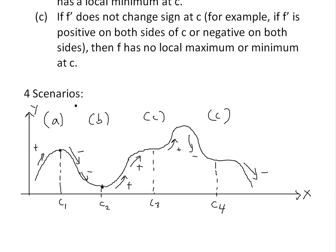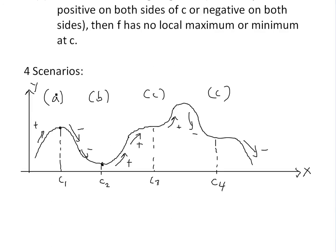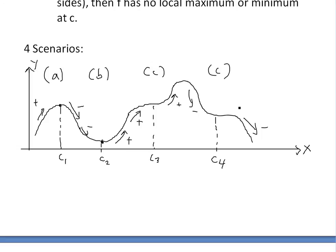Here are the scenarios I went over last time. Part a goes from positive to negative — that's a local max. And this is negative to positive — a local minimum. And then here, it goes from positive, goes to zero, then goes positive again, so it's neither local min nor max. And in this case, it goes from negative, goes to zero, then goes to negative again, so it's still not a local max or min.